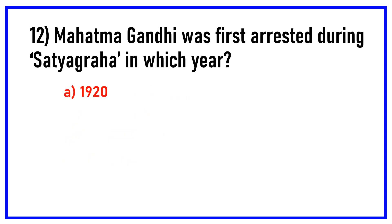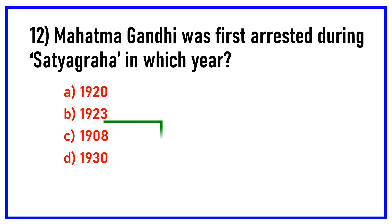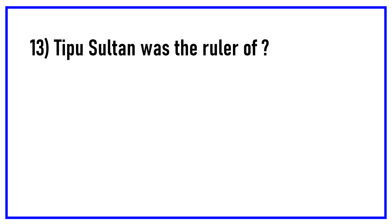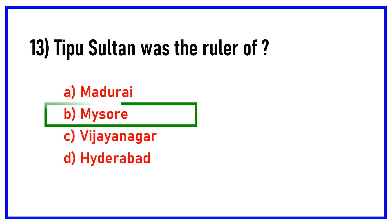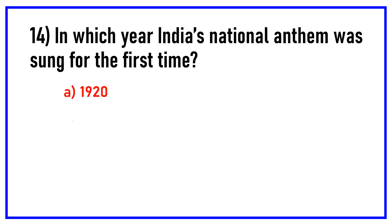Mahatma Gandhi was first arrested during Satyagraha in which year? India's national anthem was sung for the first time in which year? Answer: 1911.